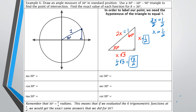I'll write those values on the triangle. The x value (horizontal, on the x-axis) is √3/2, and the y value (vertical) is 1/2. So the ordered pair representing the 30-degree angle is (√3/2, 1/2).